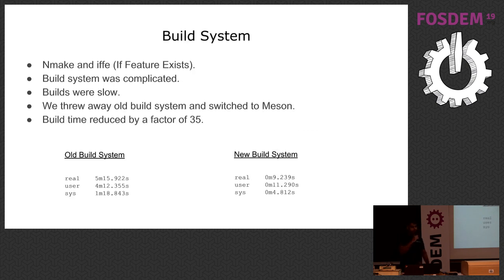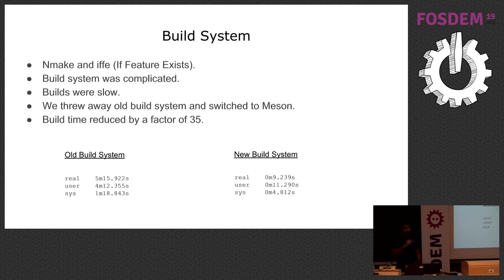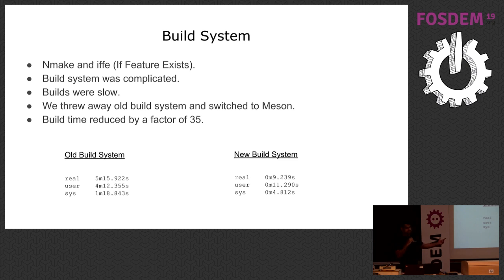We also threw out the old build system. It was a combination of a build system called nmake and a feature detection system called iffe. The build system was complicated, no one knew how to debug it, and builds were slow. We switched to Meson and managed to improve build times by more than a factor of 30. The old build system used to take more than five minutes; right now it builds in 10 seconds — that's a decent improvement.